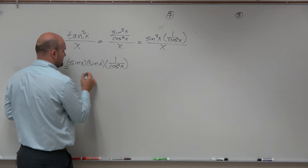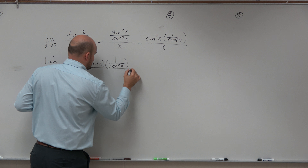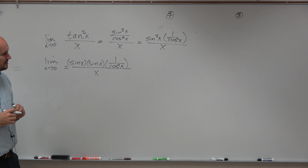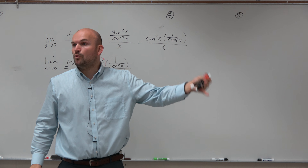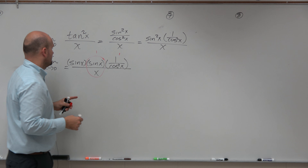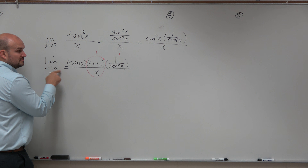The problem here is when we go ahead and separate this, we don't have anything for sine squared of x over x. So what we have to do is break this down one more time. I'm going to rewrite the limit as sine of x times sine of x. I could break apart the 1 minus cosine squared, but that's not really going to help us out, so let's leave it like that.